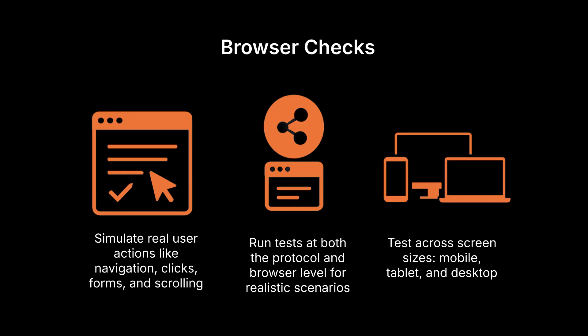Browser checks take synthetic monitoring to the next level. They allow you to validate entire user journeys, not just endpoints. With browser checks, you can simulate user interactions on a webpage such as navigation, clicking, form submission, and scrolling. Execute requests both at the protocol level and within the browser to emulate realistic interactive user scenarios. Configure window sizes to test across various device views, including mobile, tablet, and desktop. Browser checks leverage the K6 scripting API, which provides Playwright compatibility in the browser module. This means you can reuse your synthetic monitoring scripts for K6 performance testing and vice versa, enabling you to interact with your application and gain meaningful performance insights.